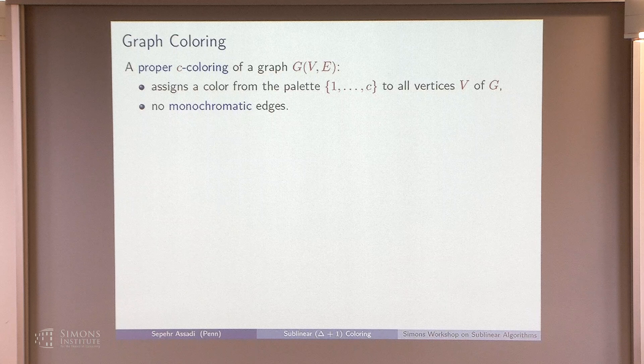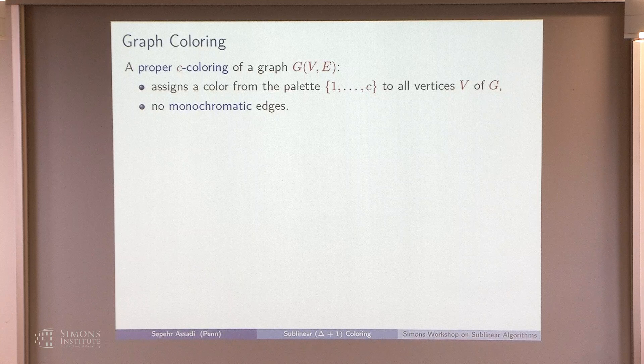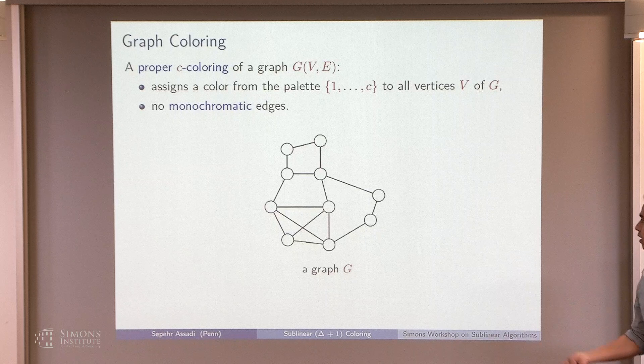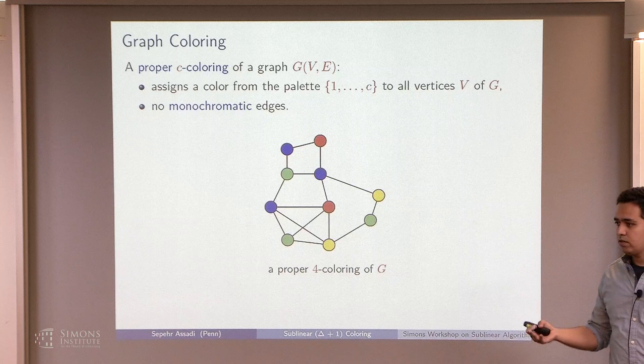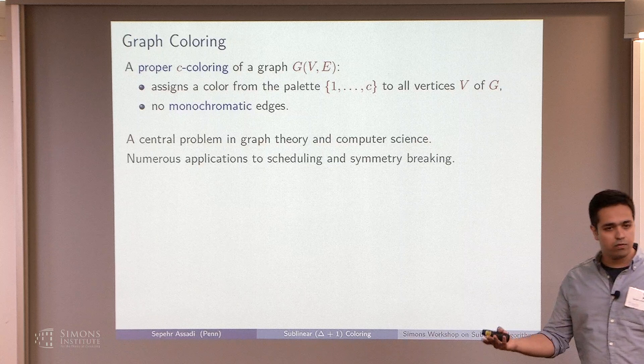So graph coloring — we all know the definition, but just a quick recap. I have a graph and a palette of, let's say, size C colors, and I want to choose a color from this palette for every vertex such that there are no monochromatic edges in the graph. This is a central problem in graph theory and computer science, and it has tons of different applications, mainly to scheduling and symmetry breaking.